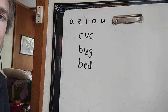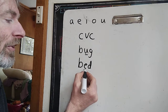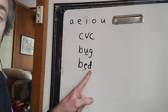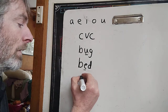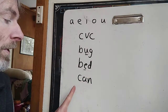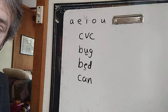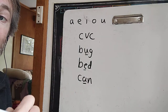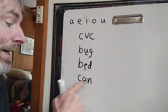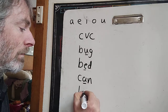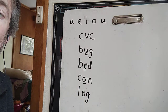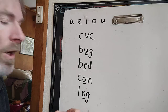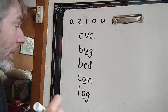What about the word 'bed'? What's the vowel in this word? The vowel is the E. B is a consonant, D is a consonant. What about 'can'? The vowel is the A. C is a consonant, N is a consonant. What about 'log'? The vowel is O, and the L and the G are consonants.